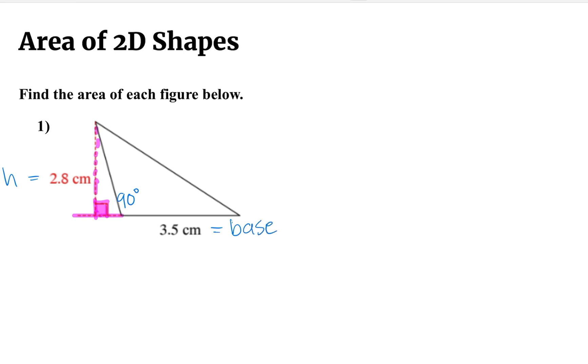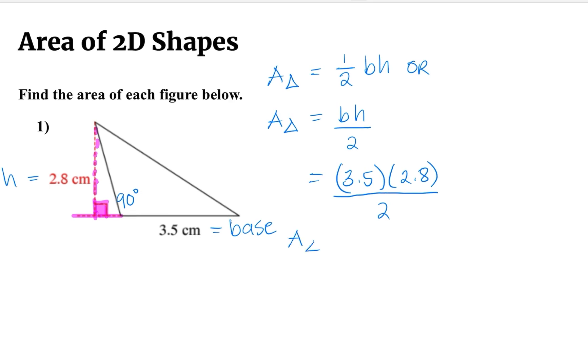This one is going to be considered as the base. So to find area of a triangle we are going to write one-half times base times height, or we can write area of a triangle equals the base times the height divided by two. Let's substitute: base is 3.5, height is 2.8. Multiply these two and divide by two. We should get the area of this triangle as 4.9 centimeter square.